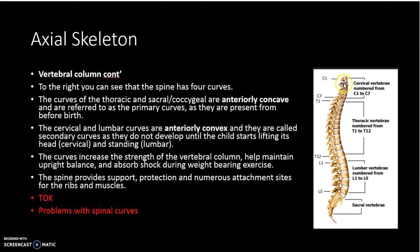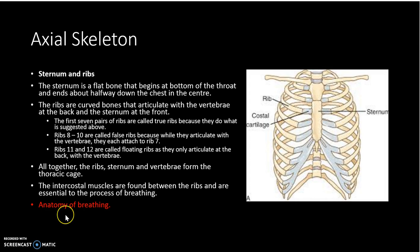The cervical curve doesn't exist until the baby, once born, starts to try to lift its head. At birth this area is dead straight, as is the lumbar area. The cervical curve starts to develop when the baby starts to lift its head, and the lumbar curve starts to develop once the baby starts to walk. When we talk about our axial skeleton, we also discuss our ribs and sternum, which obviously play an important role in protecting the heart and lungs.